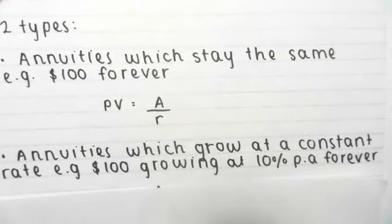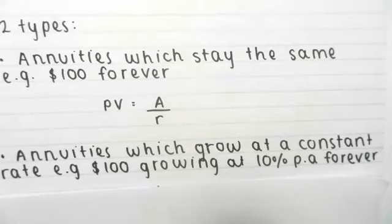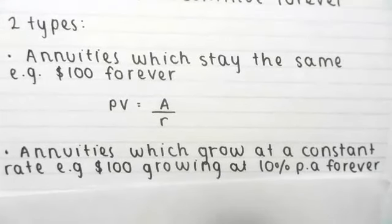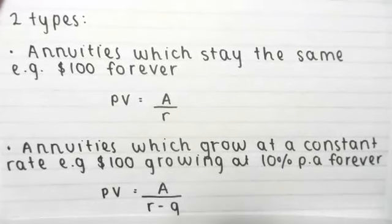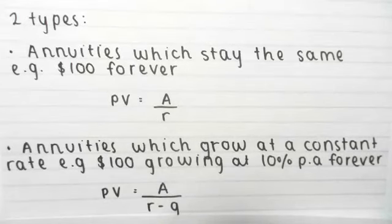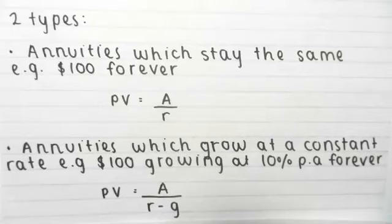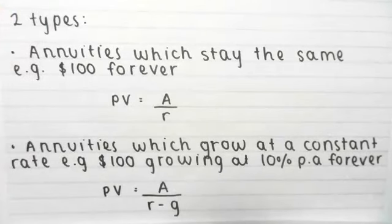The second type is an annuity that grows at a constant rate but continues forever. For example, $100 in year one, $110 in year two, and so on. The formula is A divided by (R minus G), where A is your annuity value, R is your interest rate, and G is your growth rate. Both R and G must be in the same time period as your cash flows — so if cash flows are monthly, G must be a monthly rate.